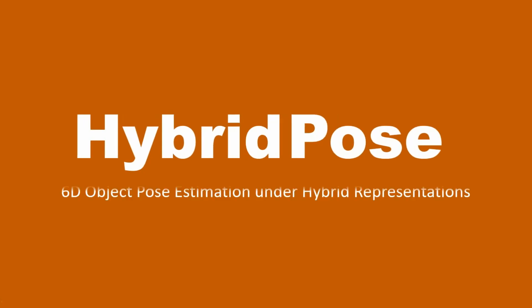We introduce Hybrid Pose, a novel 6D pose estimation method using hybrid representations. Given a 3D model and an RGB image, we find a rotation matrix R and a translation vector T that transform the model from its object coordinate system to the world coordinate system.